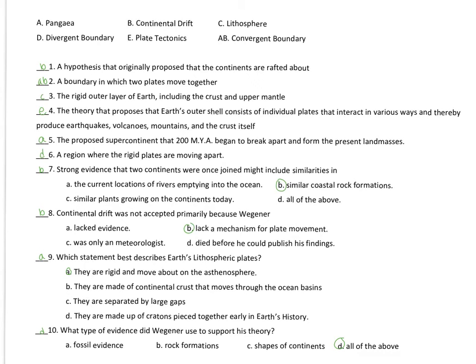The rigid outer layer of Earth, including the crust and upper mantle, would be lithosphere. The theory that proposes that Earth's outer shell consists of individual plates, I'm going to pause there, seven major, and another dozen minor plates, that interact in various ways, and thereby produce earthquakes, volcanoes, mountains, and the crust itself. That's plate tectonics, folks. Plate tectonics in a nutshell.